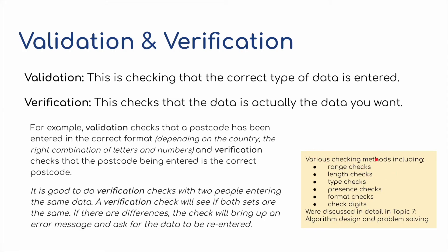Various examples of validation checking methods exist. A range check — for example, if entering somebody's age, we might set a range of 5 to 100, since nobody is a thousand years old. A length check covers the number of characters in a particular field — for example, a passport number might have 10 digits. A type check verifies what type of data has been entered — whether it's a number, boolean (yes/no), a date field, a character field, or a text field. A presence check ensures that data has actually been entered — if somebody leaves a field blank, it will prompt them to fill it in. We also have format checking and digit checking. More information can be found in topic seven on algorithms.